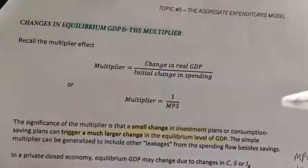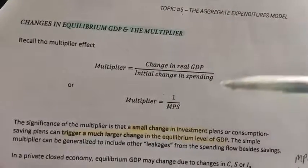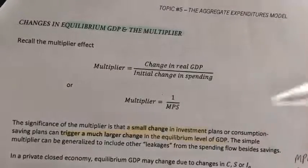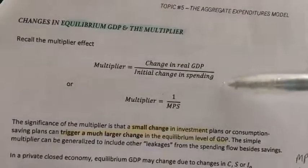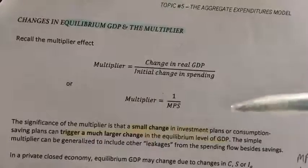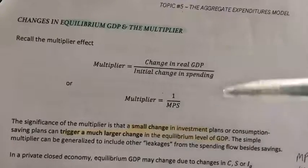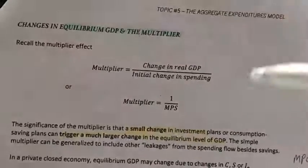I repeat, given a change in initial spending, initial means the first, okay, the first. Given an initial change in spending, it will bring about or it will trigger a much larger change in real GDP. Hence, the name multiplier effect.